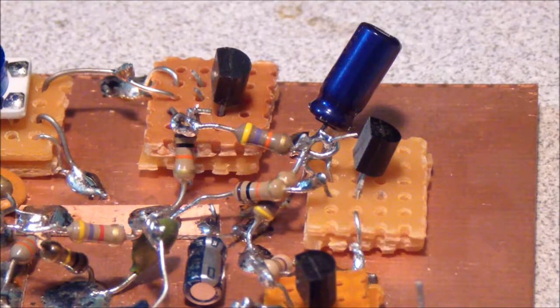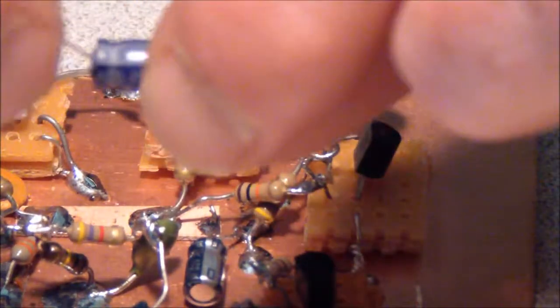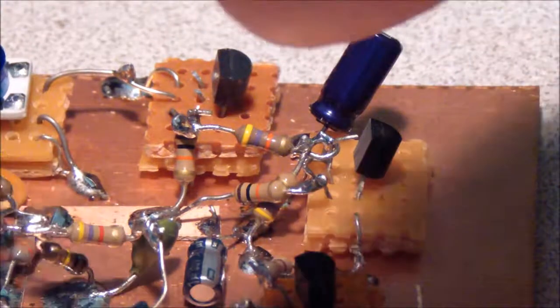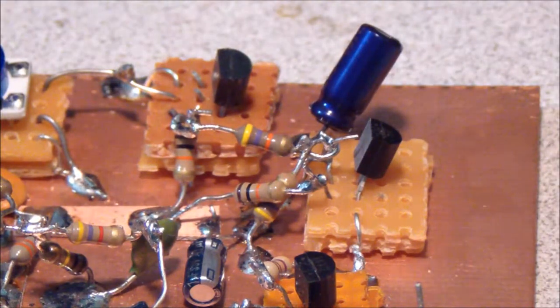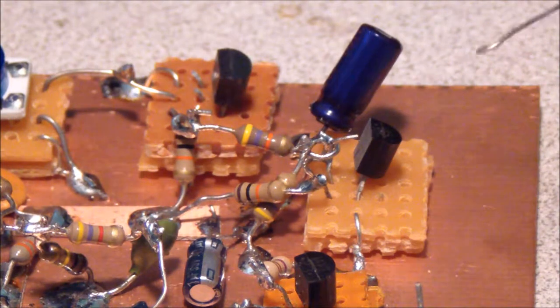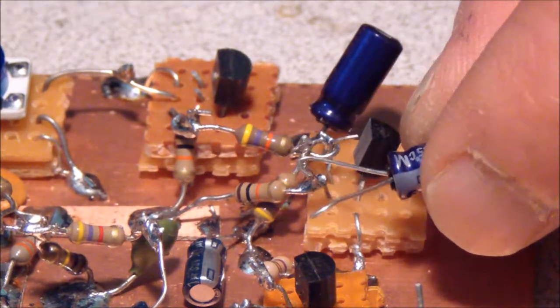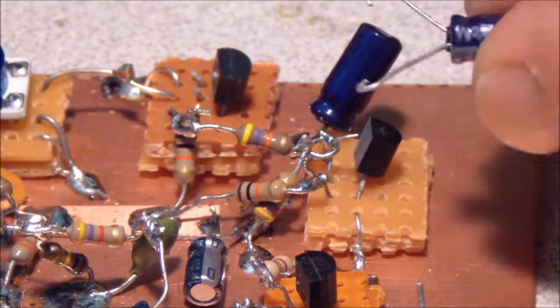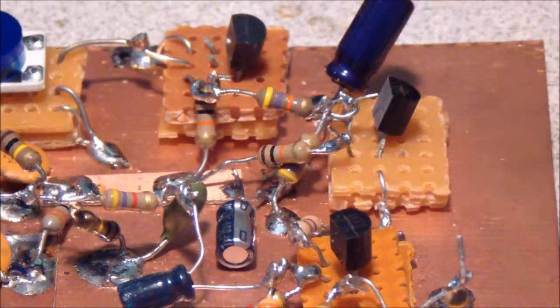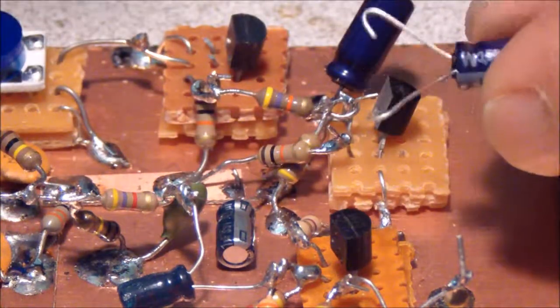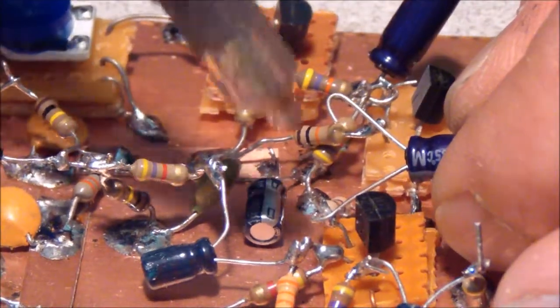The last part that we're going to install to complete our AGC circuit is another 33 microfarad capacitor. This is rated at 16 volts, well above the 9V operating voltage. And this capacitor is going to connect from the collector of the second AGC transistor that we just installed. And the other end of the capacitor will connect to the emitter resistor of the audio amplifier. The polarity, I have the minus going to the emitter of the audio output stage.